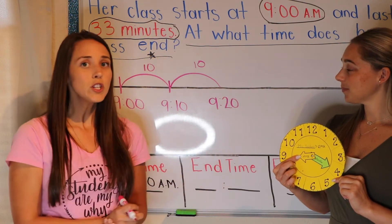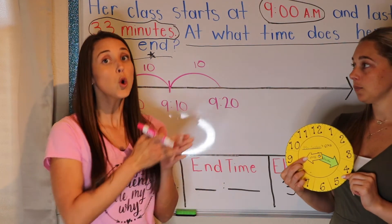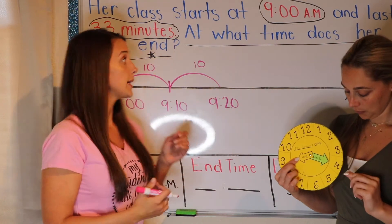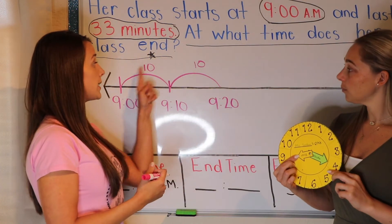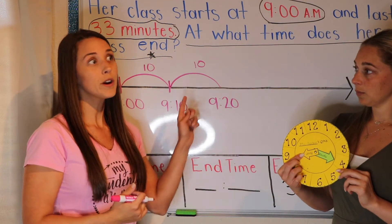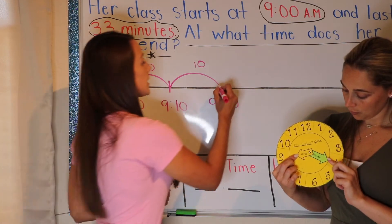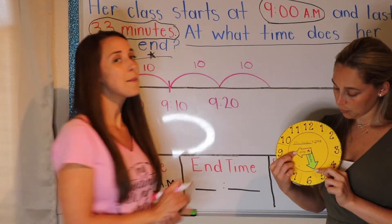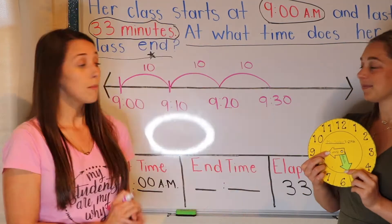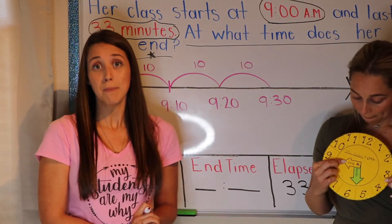Can we do another jump of 10? Yes, because we need to do a total of 33 minutes. So we did 10, we did 20, now we are going to do another jump of 10. And what time is it now? 9:30. My elapsed time is 33 minutes.